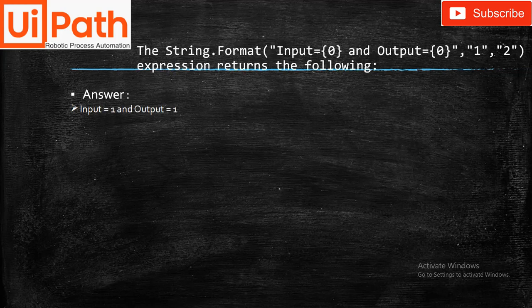For the String.Format expression where input equals zero and output equals zero, one, two — what does the expression return? Answer: Input equals one and output equals one.